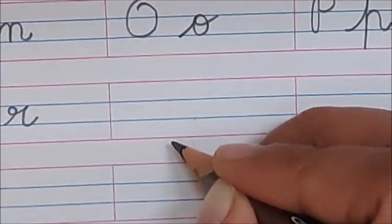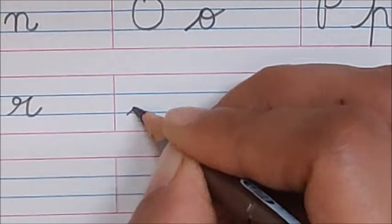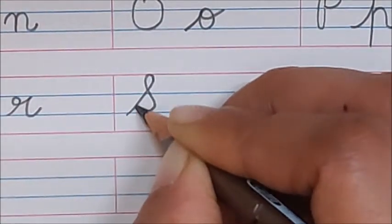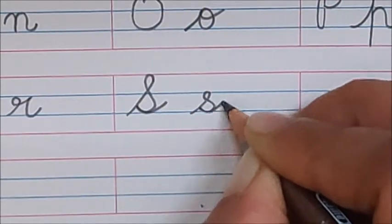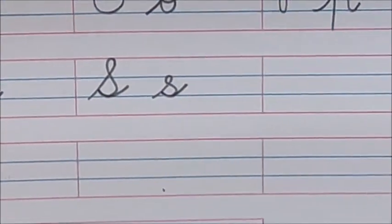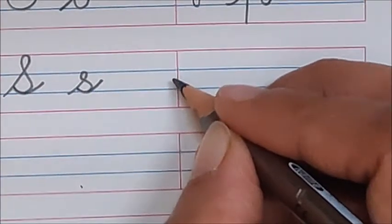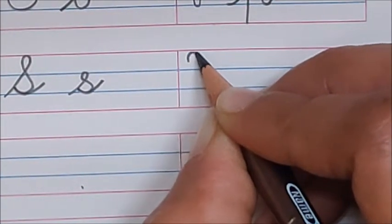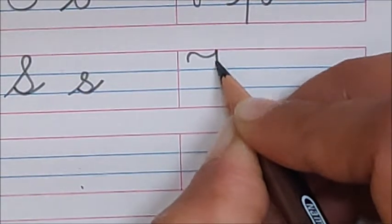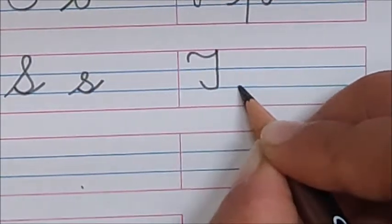Next, is S. Make a capital cursive S and lowercase S in cursive. What comes after S? T. Just like F. Go up, bend a little, standing line, and up. T.